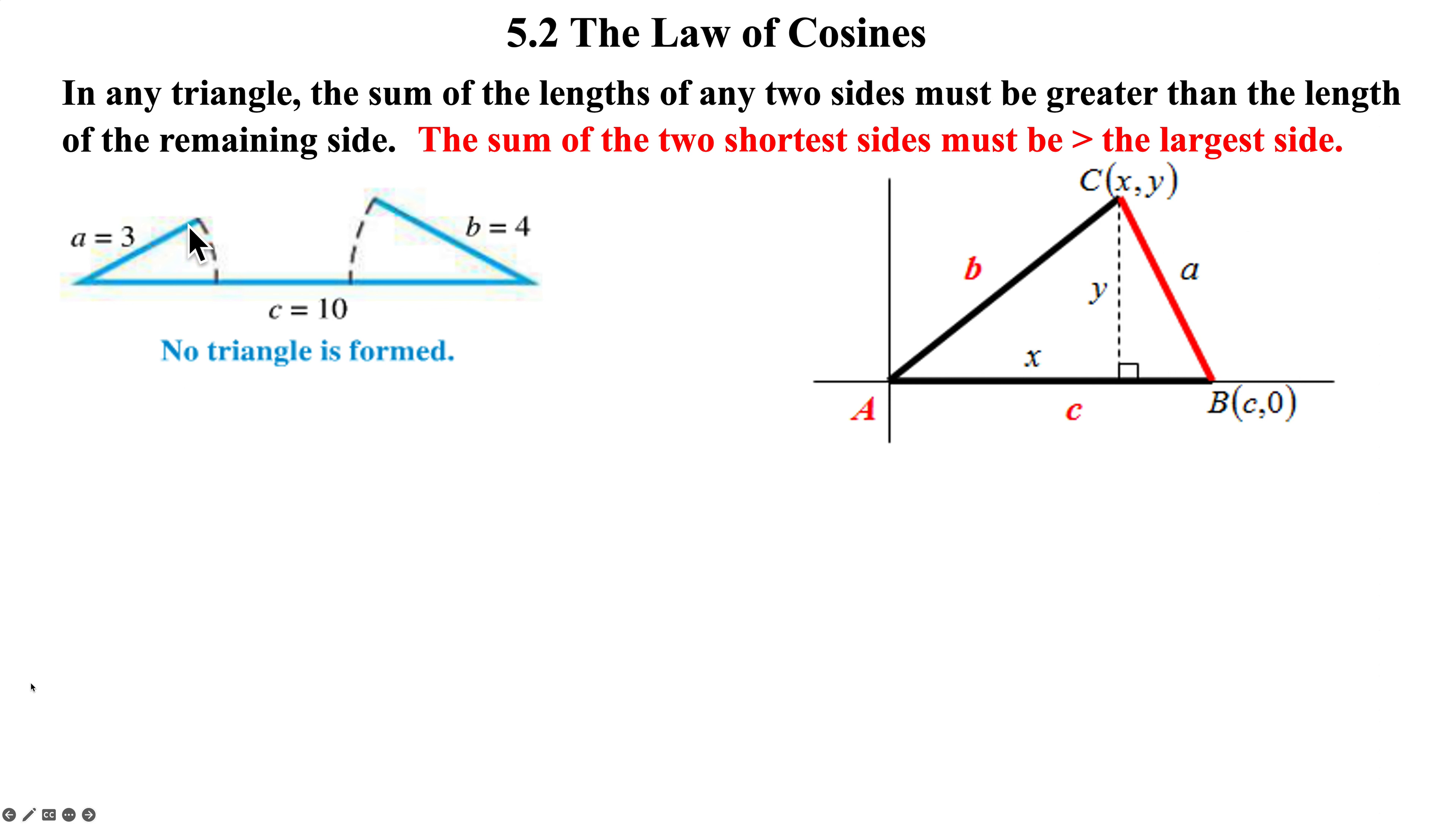Well, this really pertains to looking at adding the two shortest sides. If the sum of the two shortest sides, it has to be greater than the largest side in order for a triangle to be formed. It doesn't make sense to take the largest side and add it to one of the others. Yeah, it's going to be greater than the third side because it's already the largest side. So the smarter statement is to say the sum of the two shortest sides must be greater than the largest side in order to form a triangle.